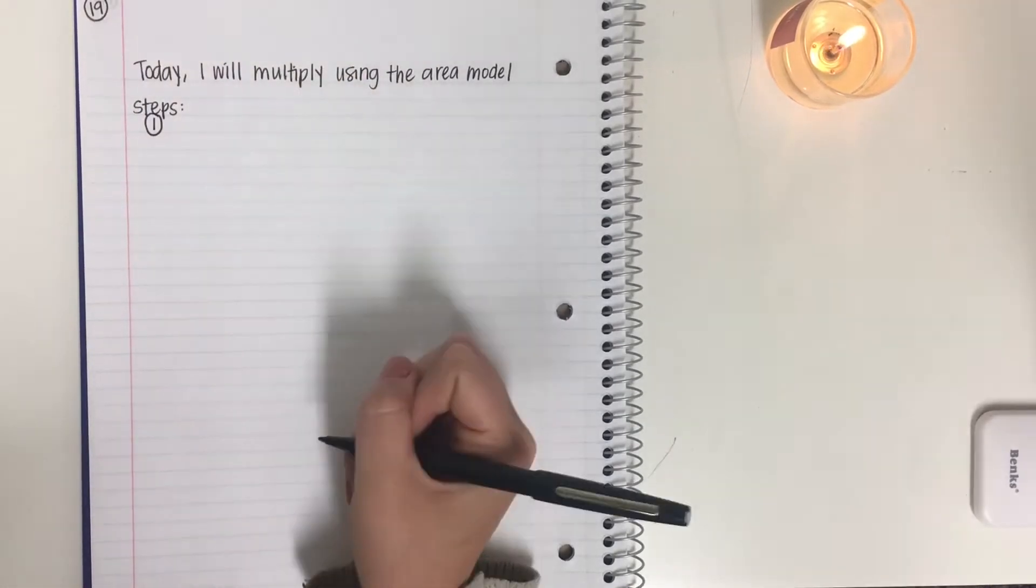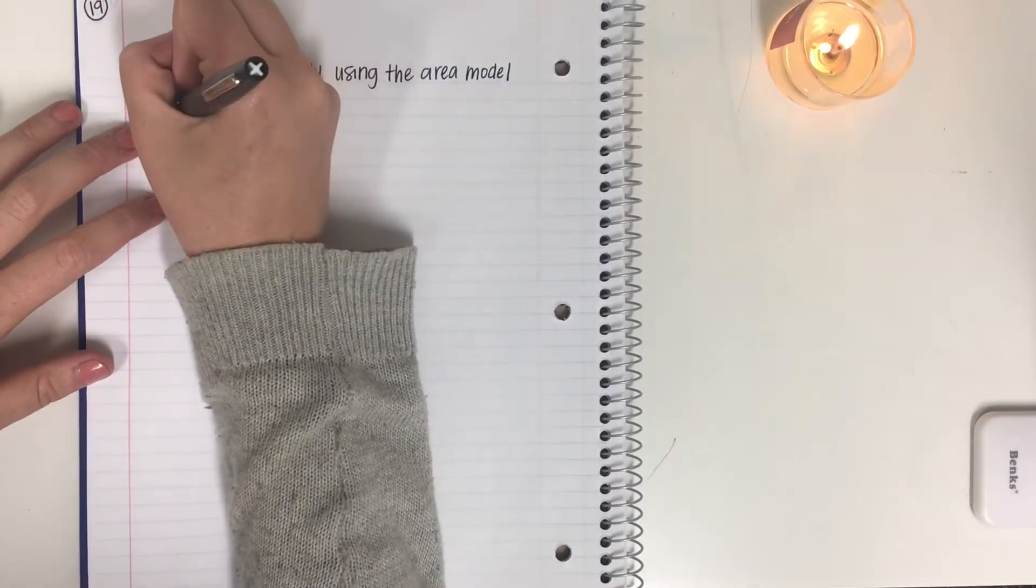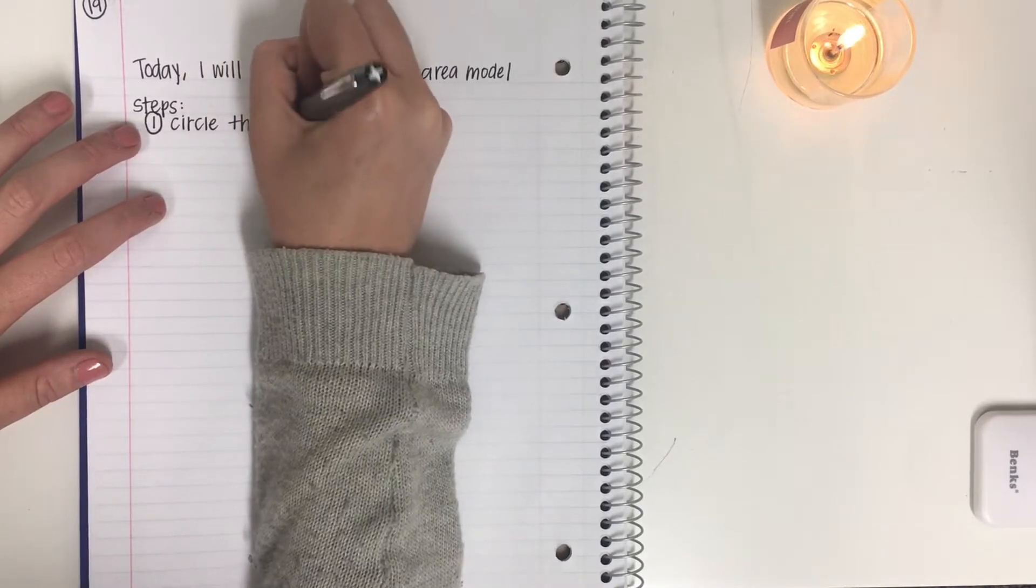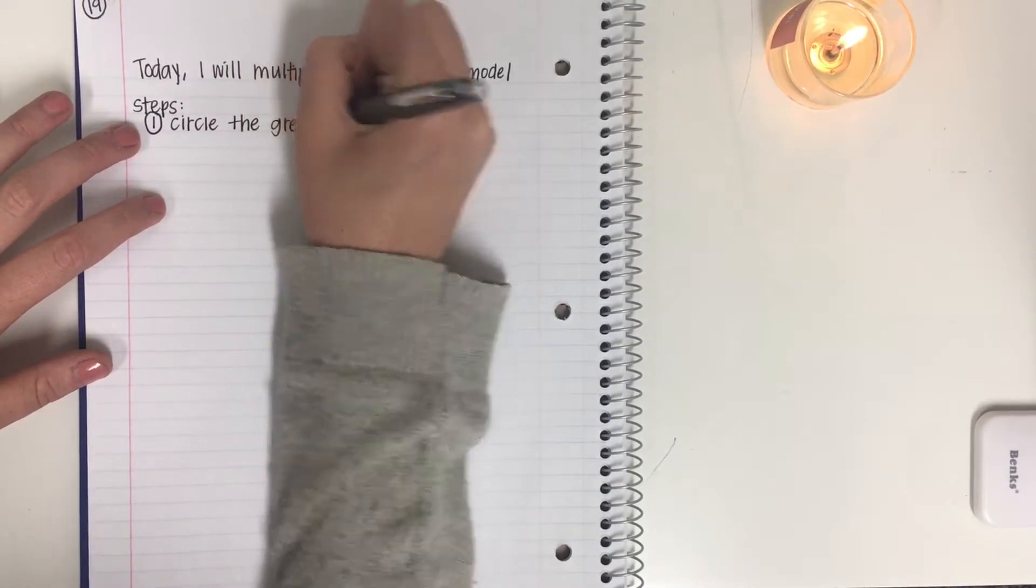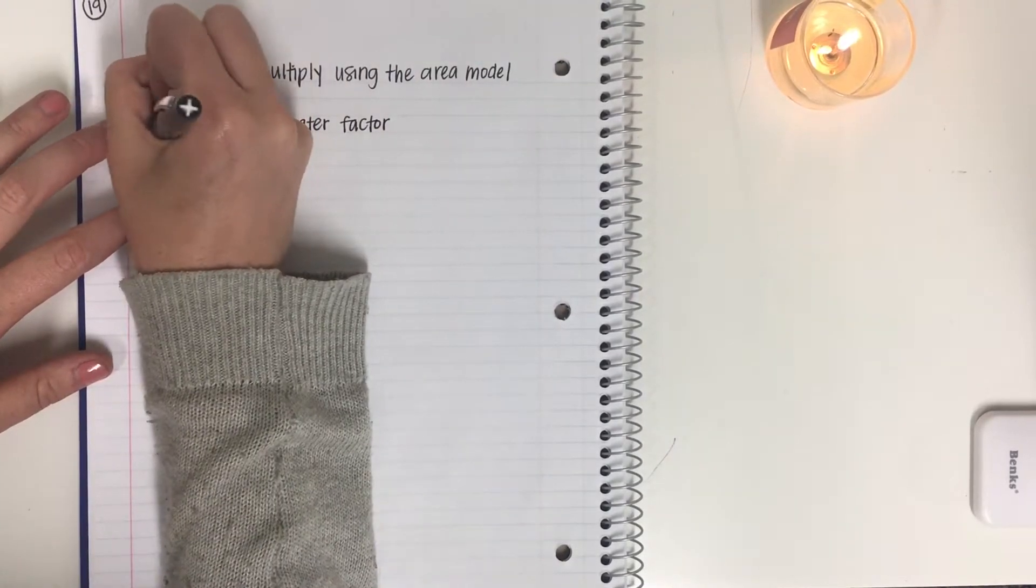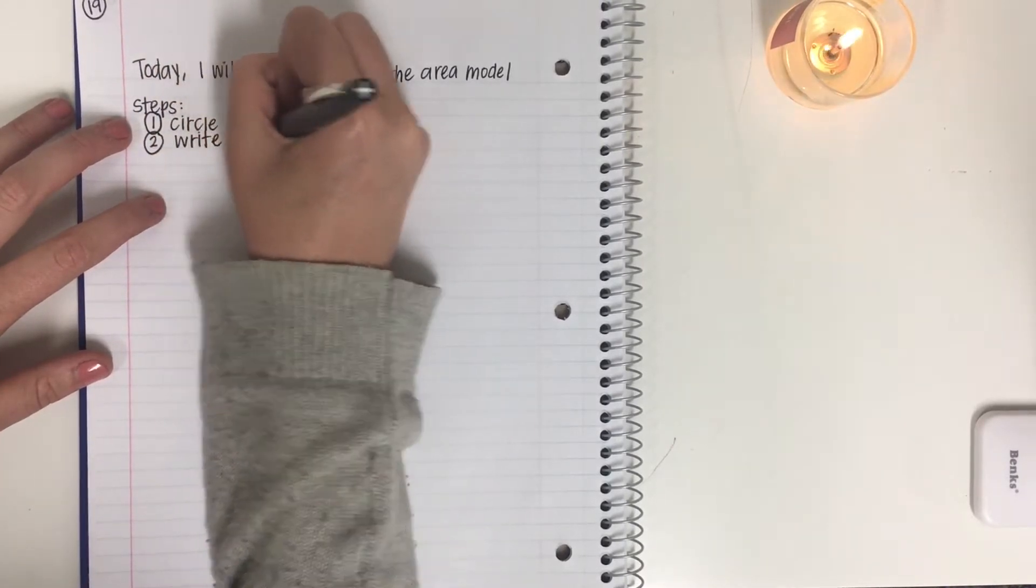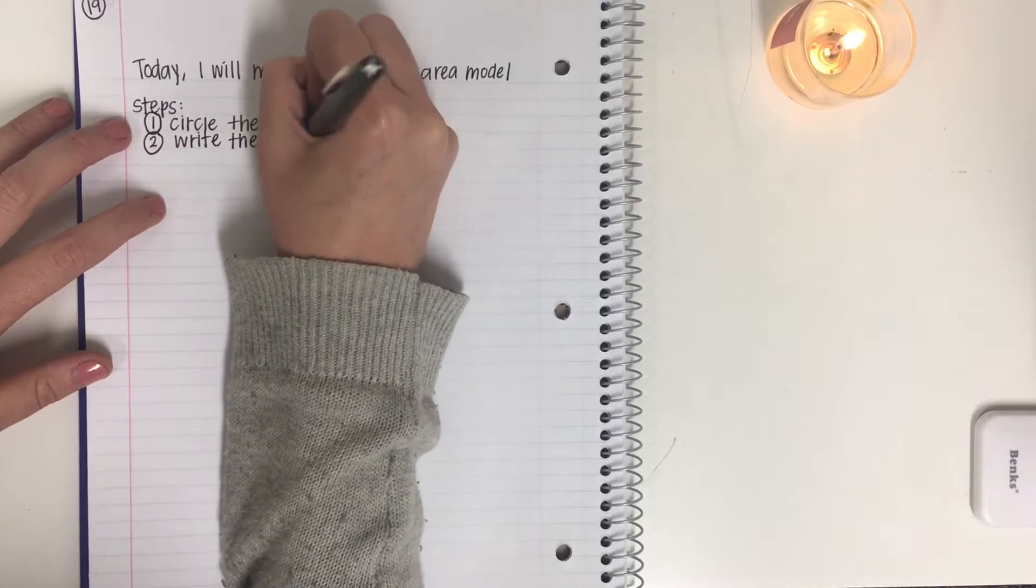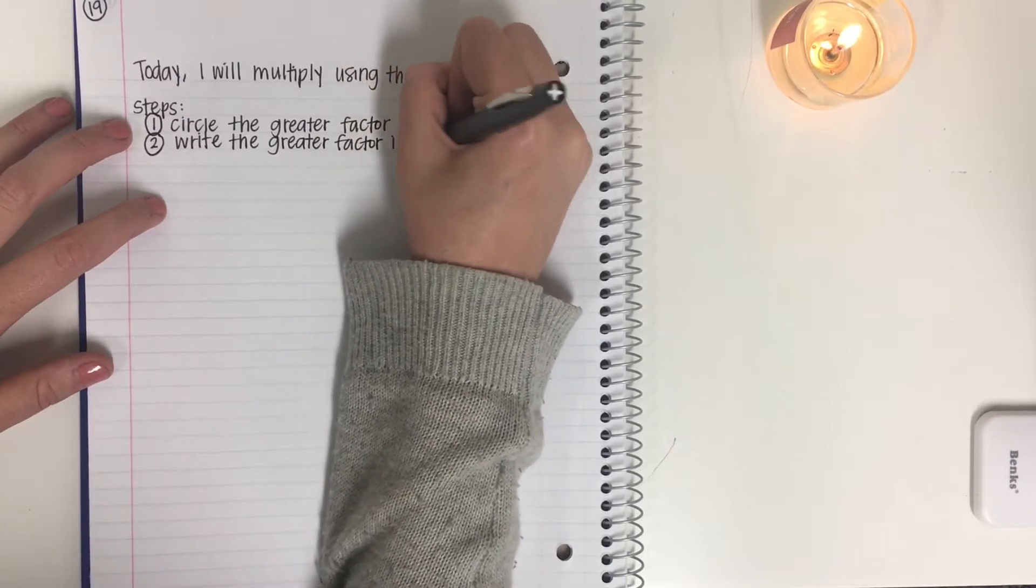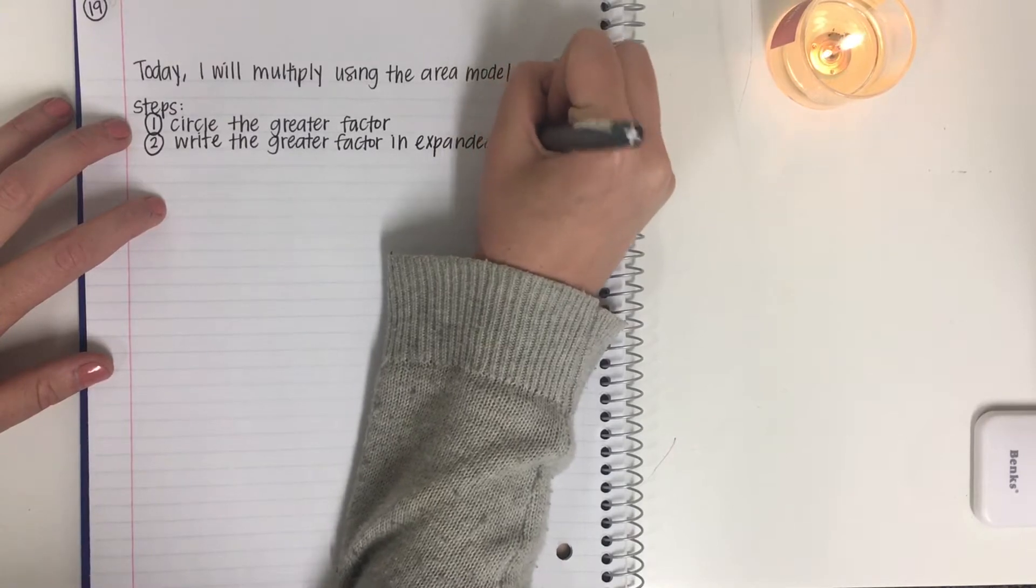When you're tackling a problem using the area model, there are a few steps that we need to follow. Step one, we first circle the greater factor. Step two, we write the greater factor in expanded form.